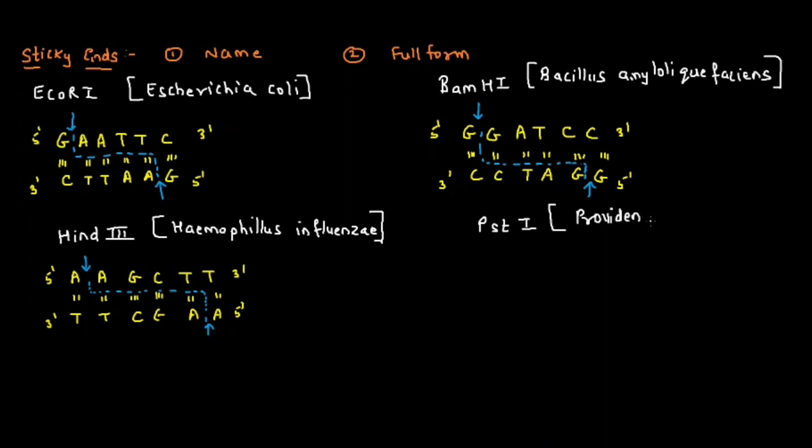Next enzyme is PST1, which stands for Providencia stuartii. It is going to cut the sequence and produce sticky ends. The sequence is CTGCAG. It forms a bond and will cut the DNA sequence from G. This enzyme is going to cut at the 3' end, very important, producing sticky ends.